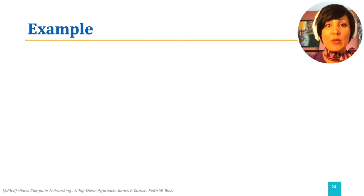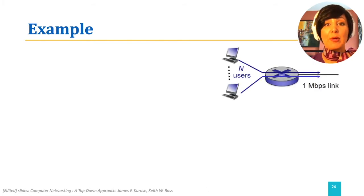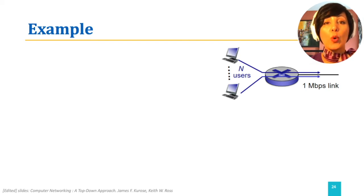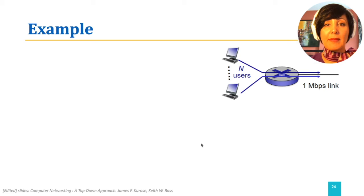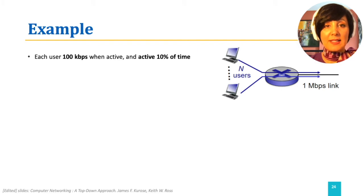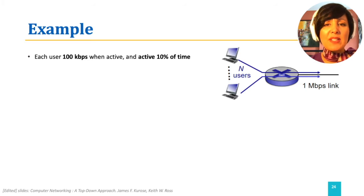Remember we said that packet switching allows more users to use the network? We want to see why and how through an example. Imagine we have N users, each connected to the first router using a 1 megabits per second link. They're all connected through this router to the rest of the network using a 1 megabits per second link. Assume each user sends 100 kilobits per second of data when active, and each user is active only 10% of the time.